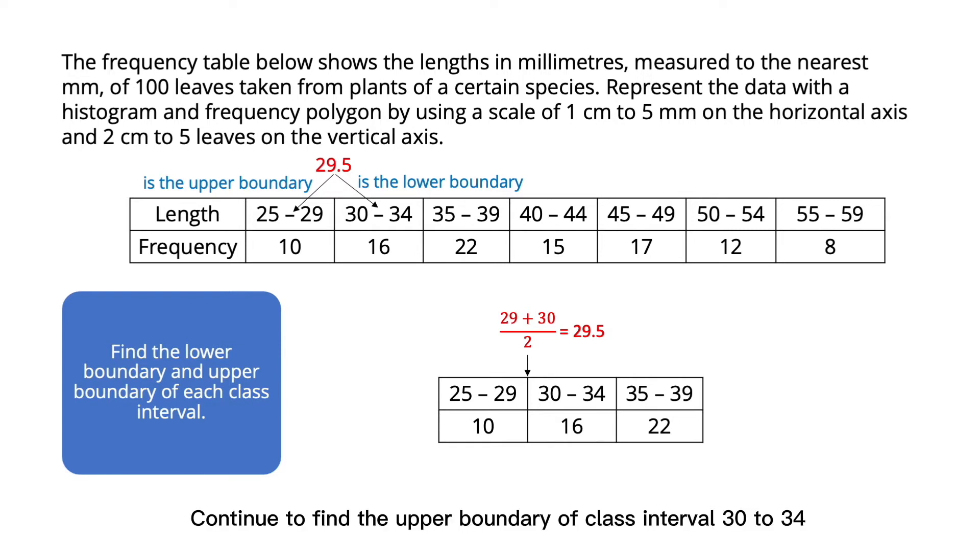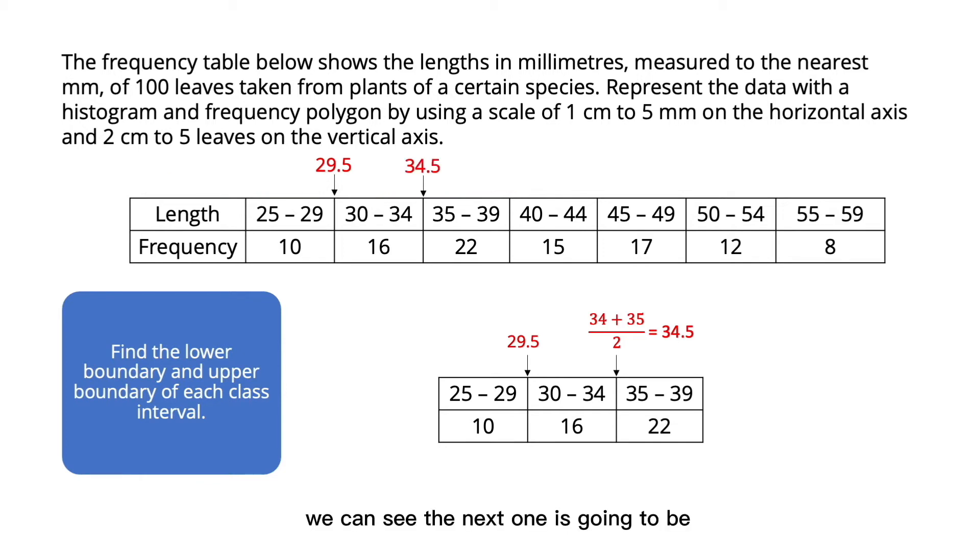Continue to find the upper boundary of the class interval 30 to 34: 34 plus 35 divided by 2, we get 34.5. And if we follow the pattern, we can see the next one is going to be 39.5, 44.5, 49.5, 54.5, 59.5, and the first boundary, 24.5.